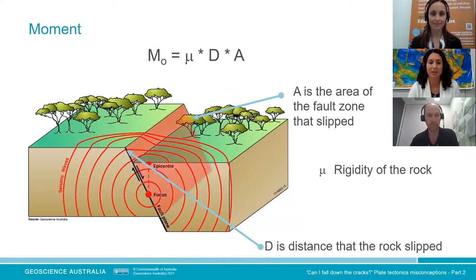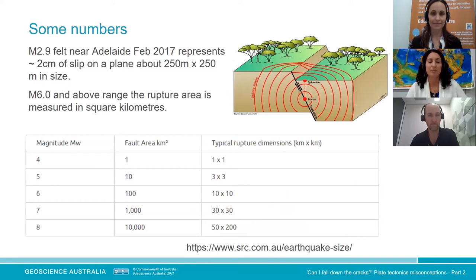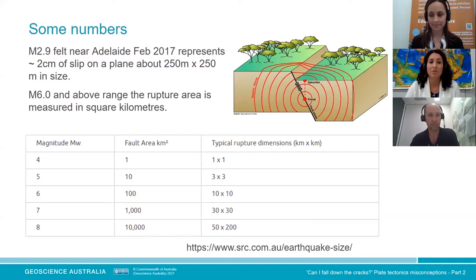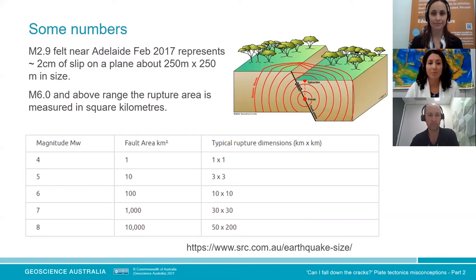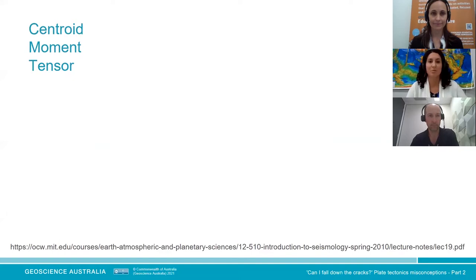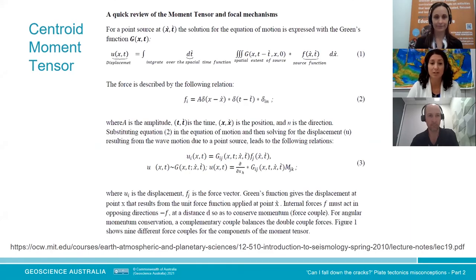To put some numbers to it — a magnitude 2.9 felt near Adelaide in February 2017 represents about two centimetres of slip over 250 by 250 metres. A magnitude 6 involves square kilometres. By the time you get to larger events, we're talking about rectangular rupture dimensions rather than circular or square, which is how textbooks tend to depict them. The gold standard is the centroid moment tensor — essentially using a supercomputer to model all the ways earthquakes could occur, then comparing received seismograms to that library to work out what happened.